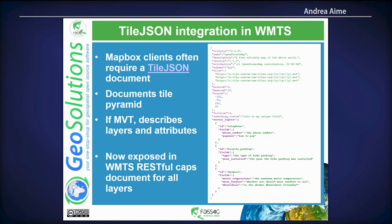In WMTS, we have built a TileJSON integration. When you go to the capabilities document of a RESTful WMTS, it has a number of resources which are links — sometimes templates where you fill in X, Y, and Z. One of them in GeoServer's capabilities document is a compliant TileJSON document. TileJSON is interesting because it plays into the MapBox ecosystem: you can point your MapBox client to the TileJSON, which describes templates for the tiles, the area covered, and for vector tiles, which attributes are present — giving the client full information on how to access the tiles.